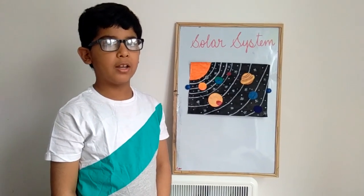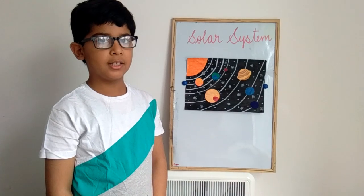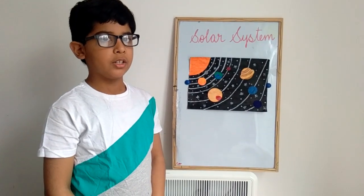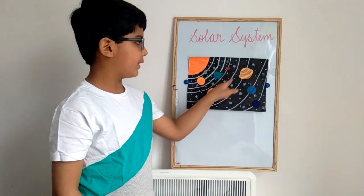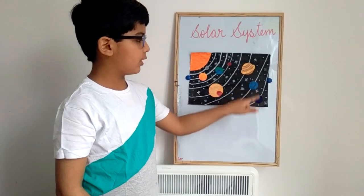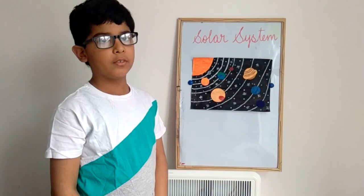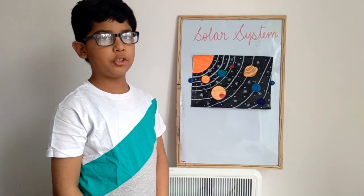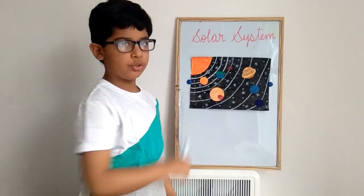Now I will tell you the outer planets. Jupiter and Saturn are the gas giants, and Uranus and Neptune are the ice giants. So first I am going to tell you about Jupiter.